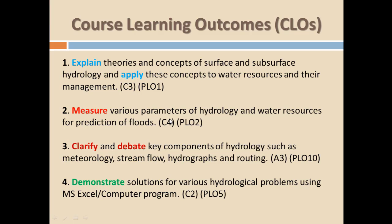The course learning outcomes of engineering hydrology are four in number. CLO one is to explain theories and concepts of surface and subsurface hydrology, and to apply these concepts to water resources and their management.